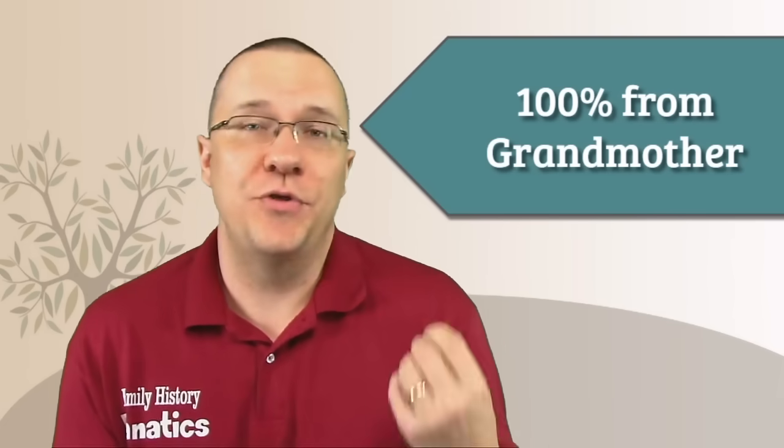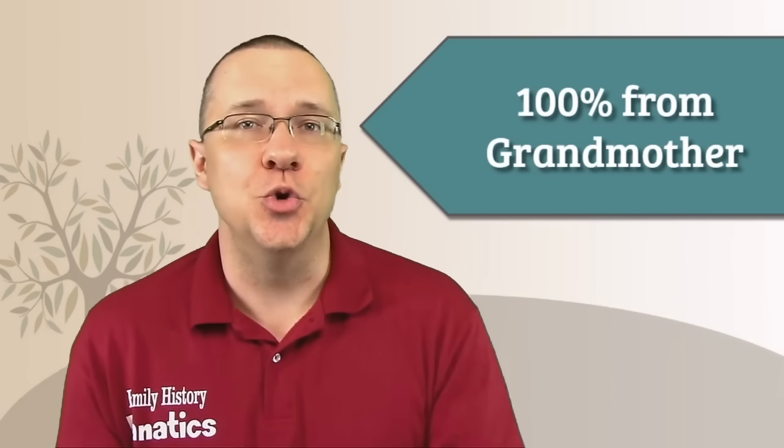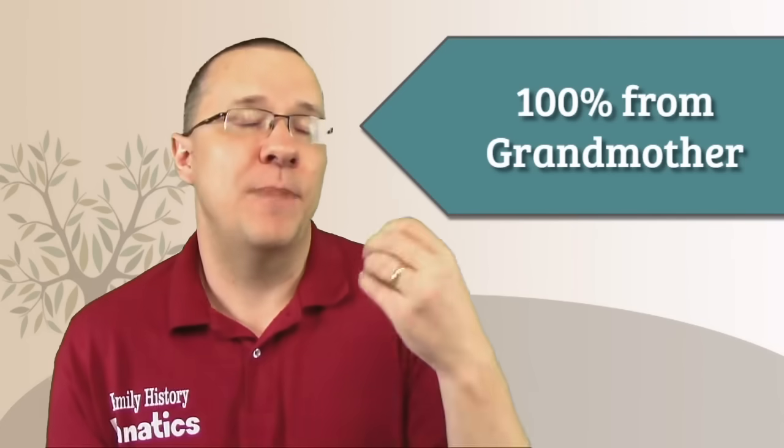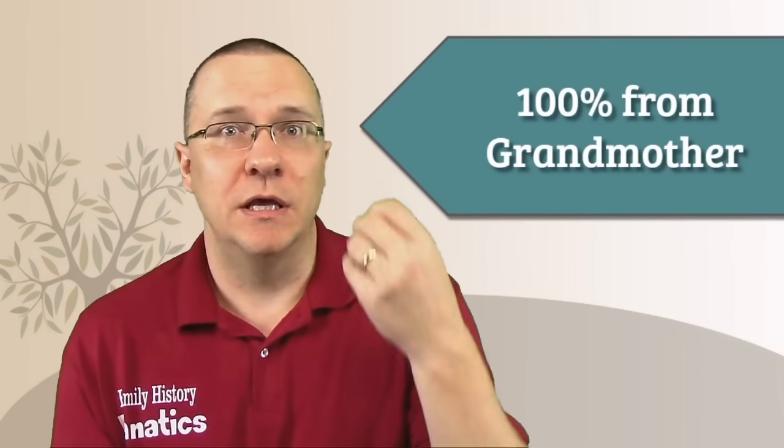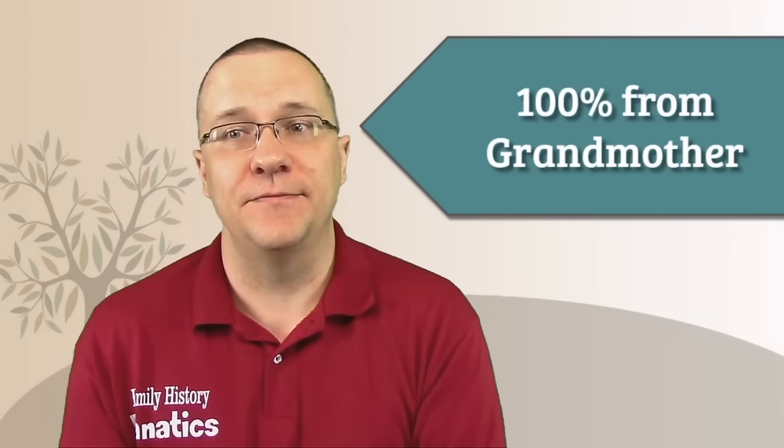Likewise, the same thing can happen with your grandmother. You can inherit a chromosome that your parent received from their mother exactly the way that your parent has it. If I look at myself again, and this is comparing to my grandfather, I look at chromosome number 22 and I see that it is black across the bottom. That indicates that there is no match for my grandfather, which means I inherited this chromosome from my grandmother, from my paternal grandmother. So it is an exact copy of the chromosome that my father has, which he received from his mother.